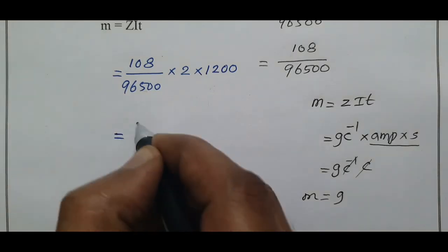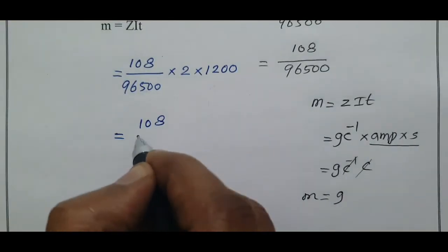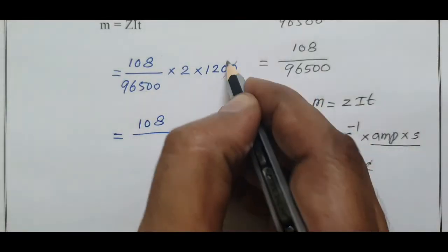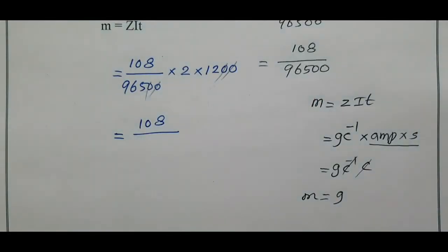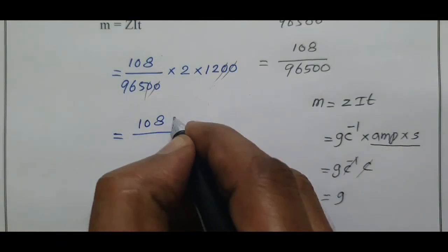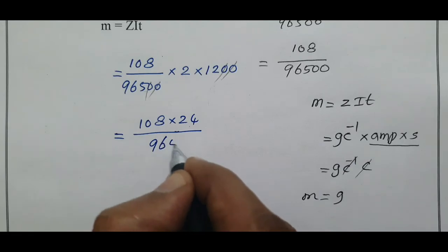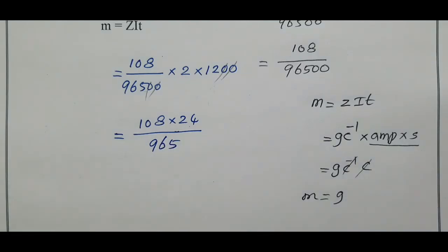That equals 108 divided by 96,500 times 2 times 1200, which equals 108 times 24 divided by 965. By taking logarithm we can solve this problem.